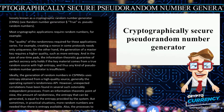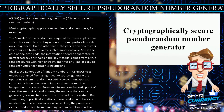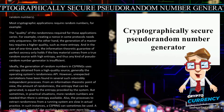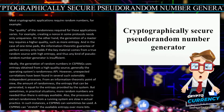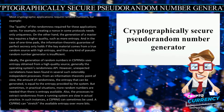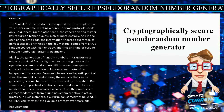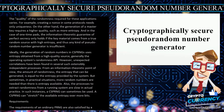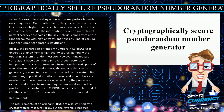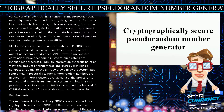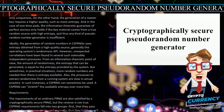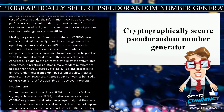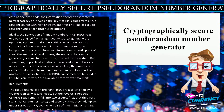Ideally, the generation of random numbers in a CSPRNG uses entropy obtained from a high-quality source, generally the operating system's randomness API. However, unexpected correlations have been found in several such ostensibly independent processes. From an information-theoretic point of view, the amount of randomness — the entropy that can be generated — is equal to the entropy provided by the system. But sometimes in practical situations, more random numbers are needed than there is entropy available. Also, the processes to extract randomness from a running system are slow in practice. In such instances, a CSPRNG can sometimes be used, as it can stretch the available entropy over more bits.